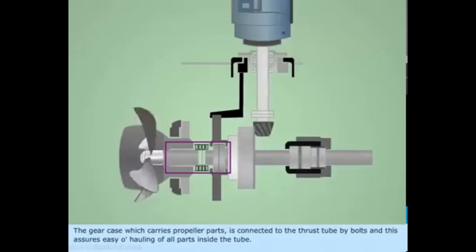The gear case which carries propeller parts is connected to the thrust tube by bolts, and this assures easy overhauling of all parts inside the tube.